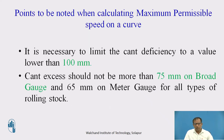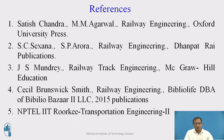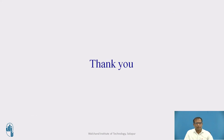We must also consider that the maximum cant deficiency is 100 mm, and cant excess is 75 mm on broad gauge and 65 mm on meter gauge, while calculating the safe speed. These are the references used for preparing this presentation. Thank you.